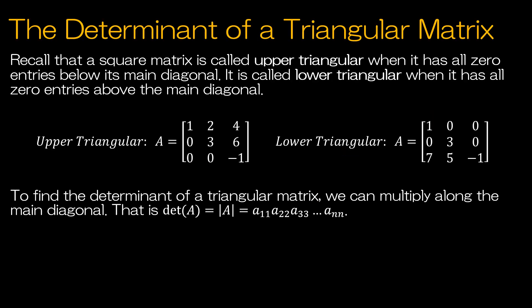One last way to find the determinant of a square matrix is to use a triangular matrix. Recall upper triangular and lower triangular matrices have all zeros below or all zeros above the main diagonal. If you have that, all you have to do to find the determinant is multiply along the diagonal. So to find the determinant of A, I would take 1 times 3 times negative 1. Keep in mind this only works on a triangular matrix — if you have other values you'd need to convert to triangular form first. Up next: determinants and elementary matrices.